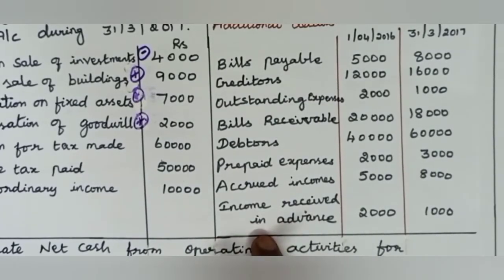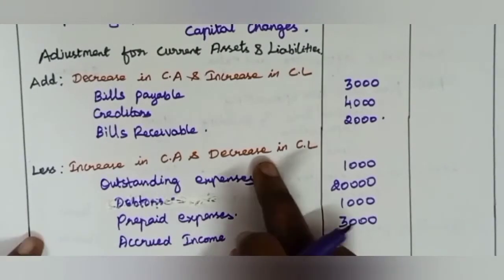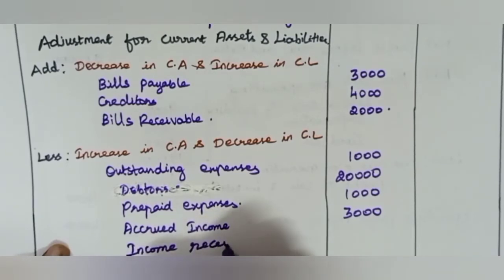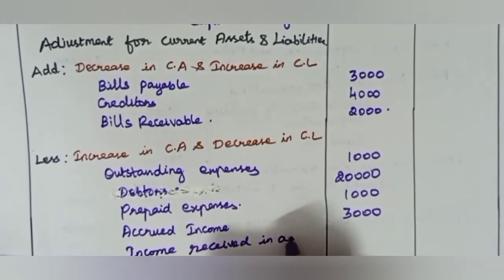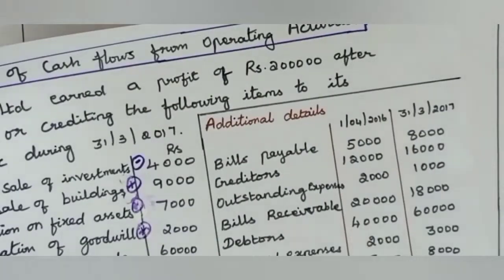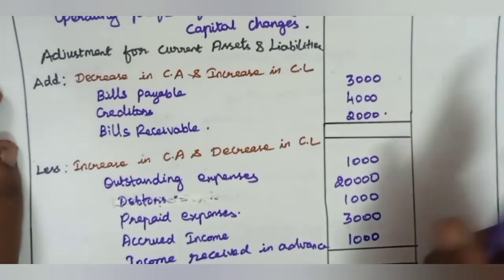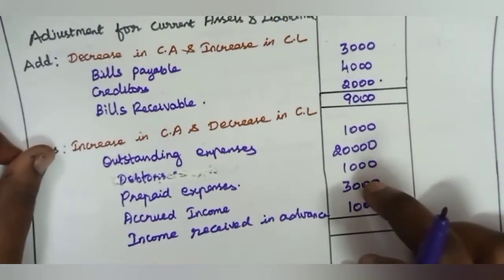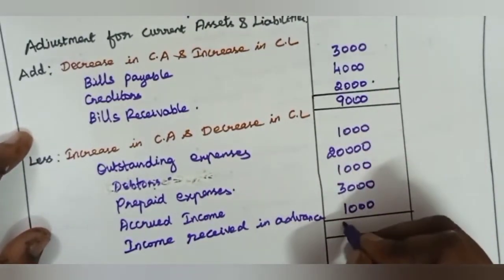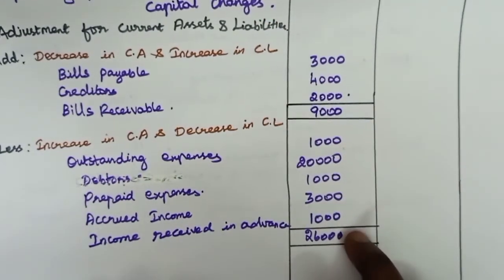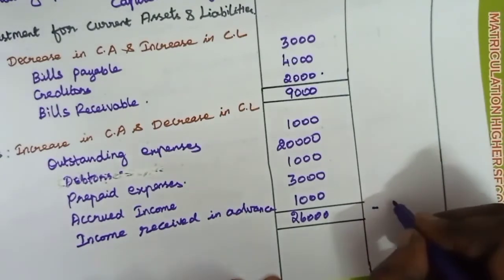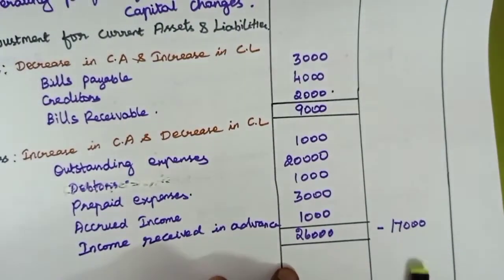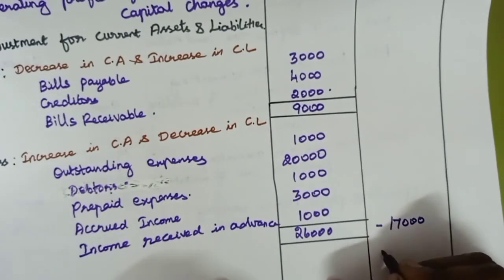Income received in advance is a current liability — decrease of 1,000, so we deduct it. Finding the totals: additions come to 9,000 and deductions come to 26,000. Net working capital change is 9,000 minus 26,000 = negative 17,000. From the operating profit we deduct 17,000, giving us 2,47,000. This is cash generated from operations.